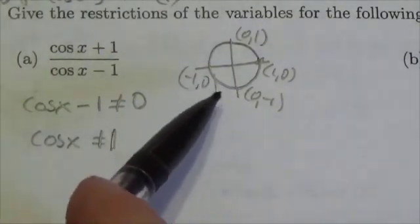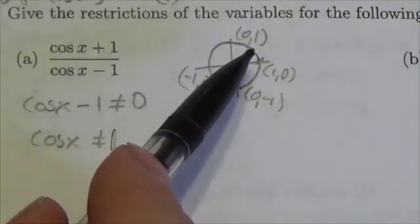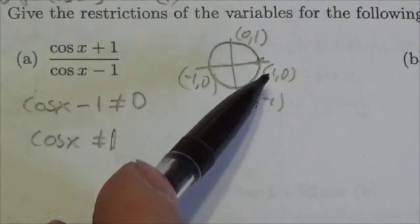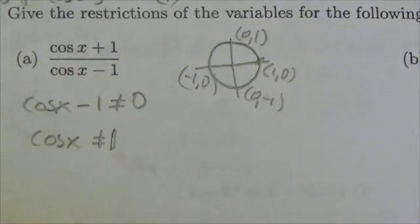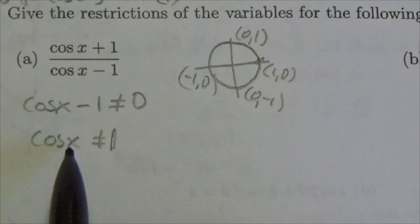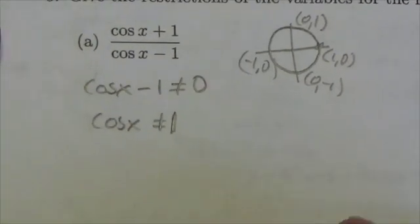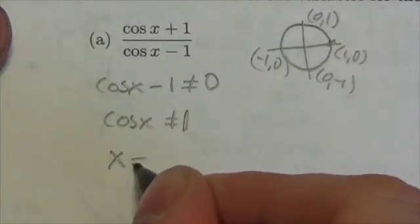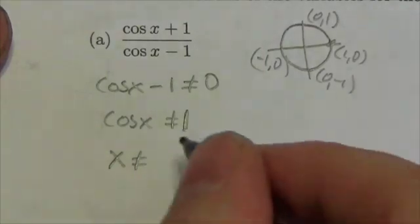Now, so where does the x-coordinate go to 1? Well, actually just here. Just at the 0 degree mark. So cosine of x cannot be allowed to equal 1 means x cannot be allowed to equal 0.